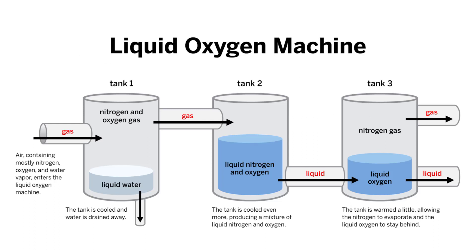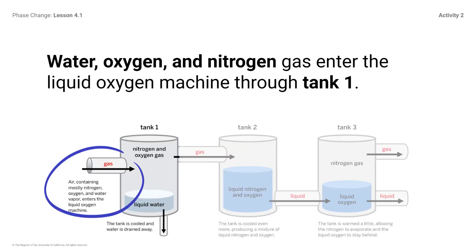The machine separates out and condenses oxygen from other gases in the air. This process requires passing the substance through three tanks with different temperatures. Let's look at it in closer detail.